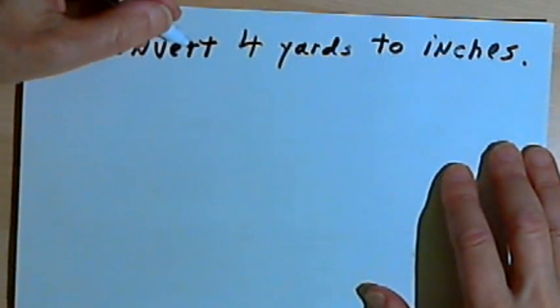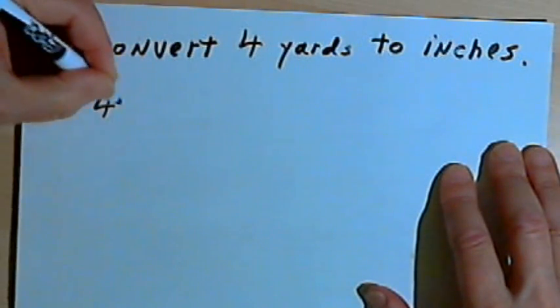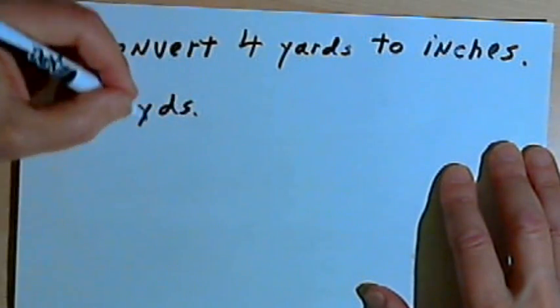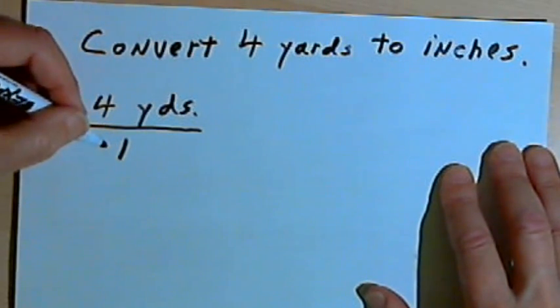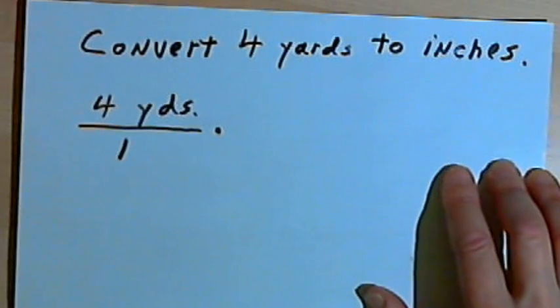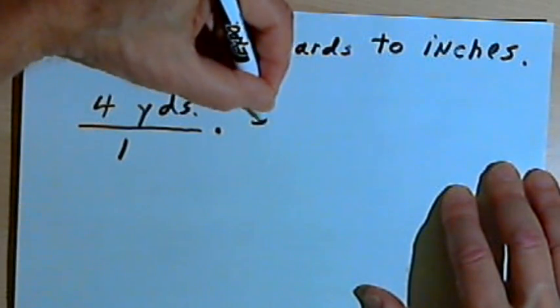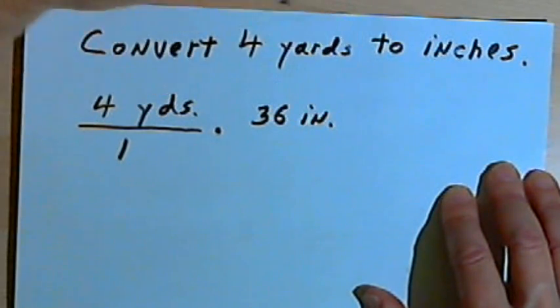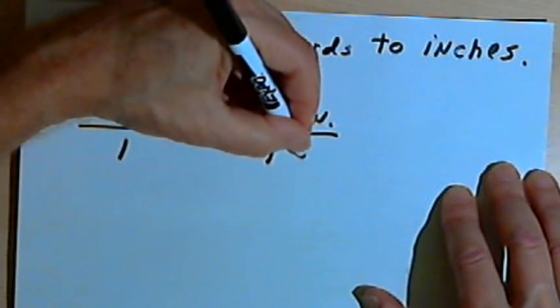Convert 4 yards to inches. Here's how I'm going to do this. I'll write 4 yards, I can abbreviate yards as yds. And just to make this clear, I'm going to make that into a fraction with 1 as the denominator. And now I'm going to multiply it by another fraction. What I'm going to multiply it by is the fraction 36 inches, and I'm going to keep that unit of measure, 36 inches over 1 yard.